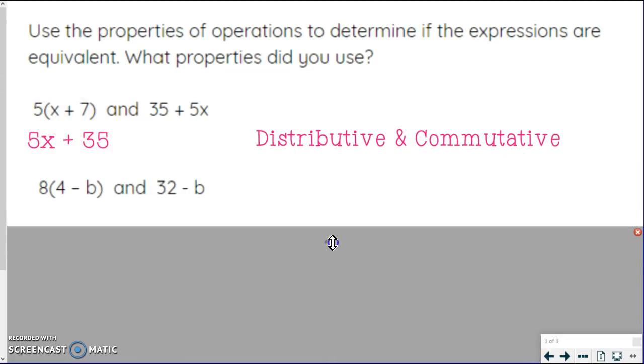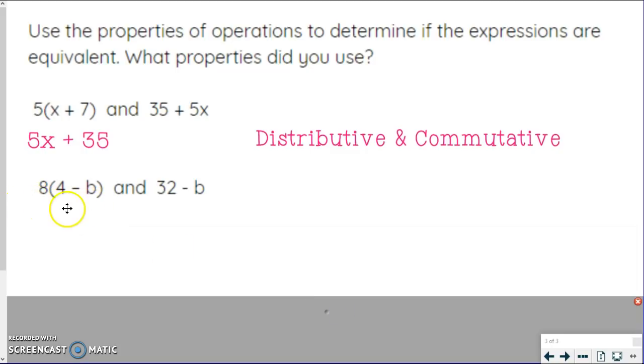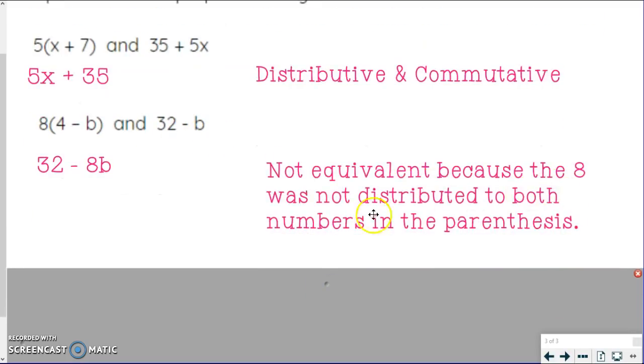Let's look at one more. I'm going to try distributive first because I see how the number is next to the parentheses, and there's subtraction in here. So I know I'm using distributive because I've got multiplication and subtraction. When I do that, I get 32 minus 8b because I distribute that 8 to the 4 and to the b. Well, when I look over here, I've got 32 minus b. So that means that this is not equivalent because the 8 was not distributed to both numbers in the parentheses. So these are not equivalent.